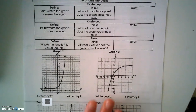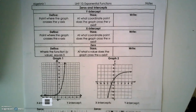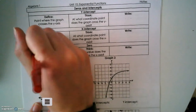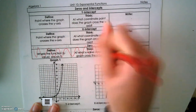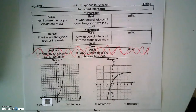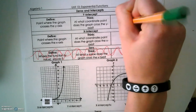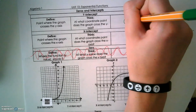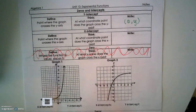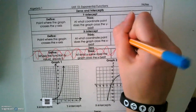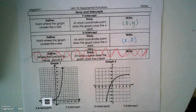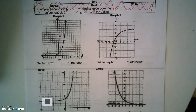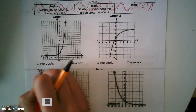Moving to the next set of characteristics: x and y intercepts. We're no longer talking about quadratic functions, so we won't talk about zeros. Remember your y intercept is (0, y), and your x intercept is (x, 0). Let's look at some of these — again, we're not worried about zeros.